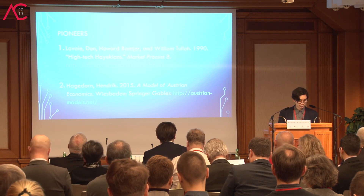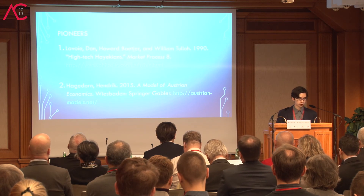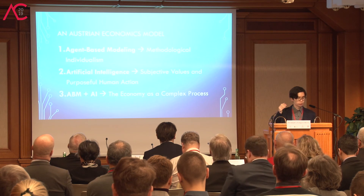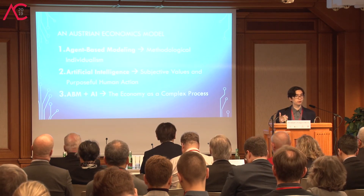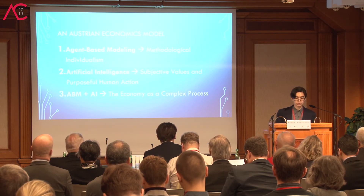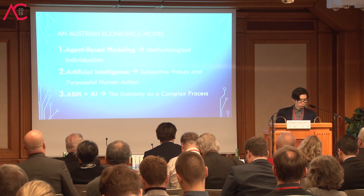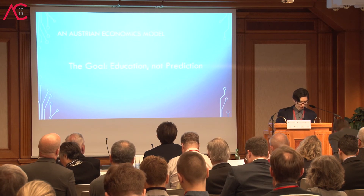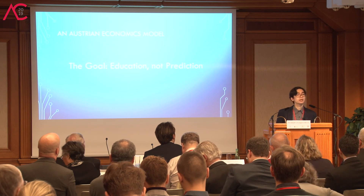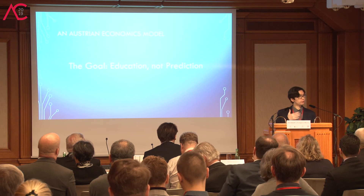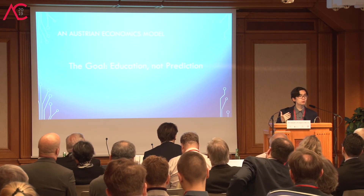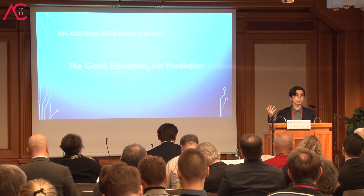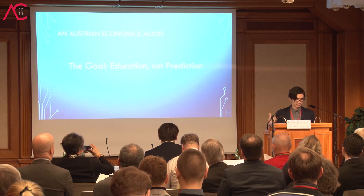The agents in Hagedorn's model are households, firms, and banks, whereas what we would like to do is model individual human beings, because we want ABM to support the methodological individualism of Austrian economics. We want artificial intelligence to capture subjective values and purposeful human action, and the combination of both to capture the economy as a complex process. The goal here is not prediction but education — to help people see the principles of Austrian economics unfold in real time through a simulation, or even an interactive game.